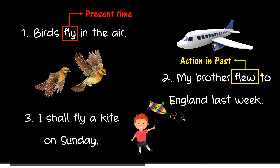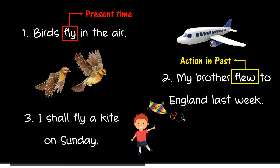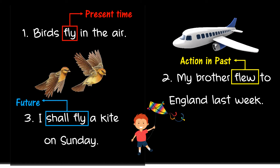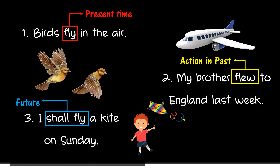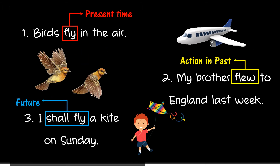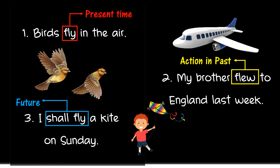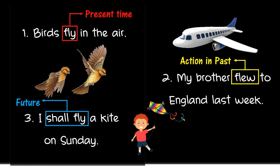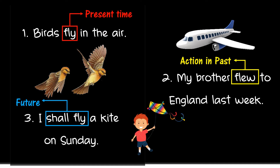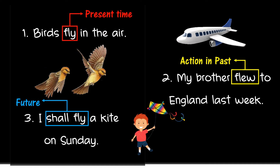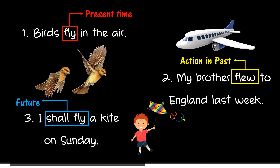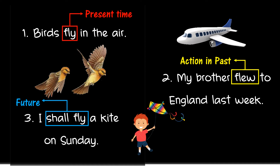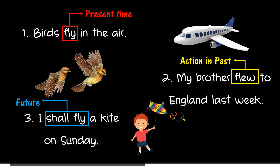The verb in the third sentence, 'shall fly', refers to the future. The future tense describes things that have yet to happen — for example, later, tomorrow, next week, next year, three years from now.